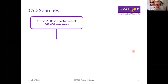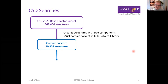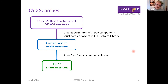Starting with the CSD 2020 best structure factor subset, which has just over half a million structures, we used the CSD Python API to search for organic structures which contain two components where one of the components is a solvent in the CSD solvent library. This gives us just over 20,000 structures. We then filtered for the 10 most common solvates, which accounts for 84% of our organic solvates.